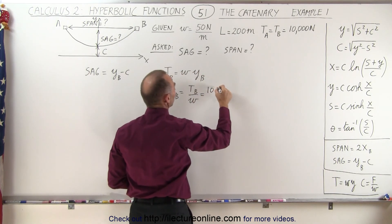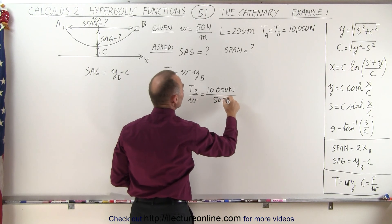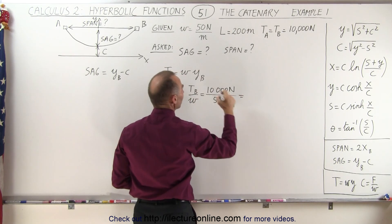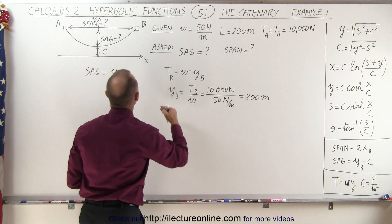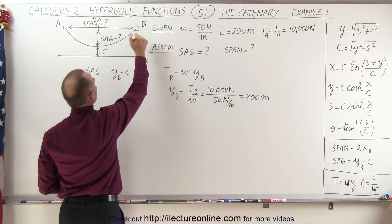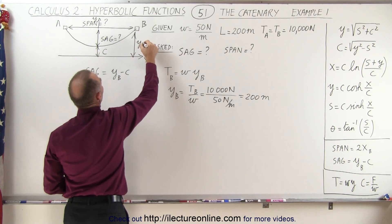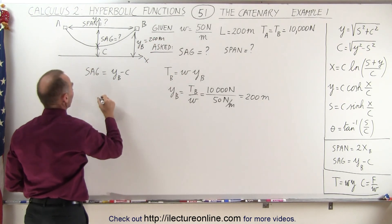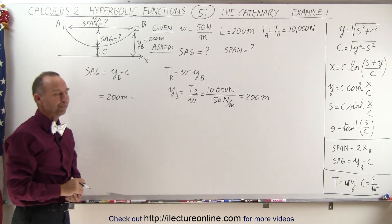So in this case we can say that Y sub B is equal to the tension at B divided by the weight per unit length, and we're given the tension at the endpoints, so this is equal to 10,000 newtons divided by 50 newtons per meter, so 50 goes into there 200 times, that would be 200 meters. So the distance from here to B, this distance right here, which is Y sub B, is now equal to 200 meters.